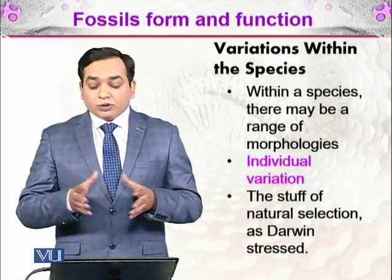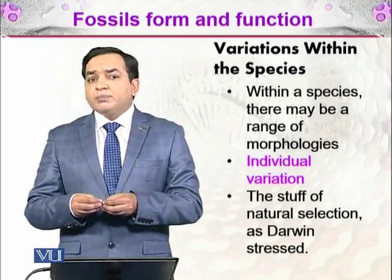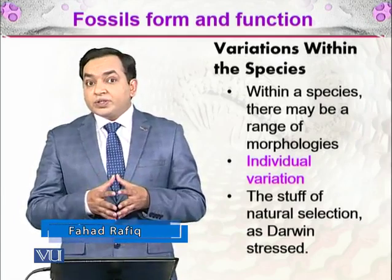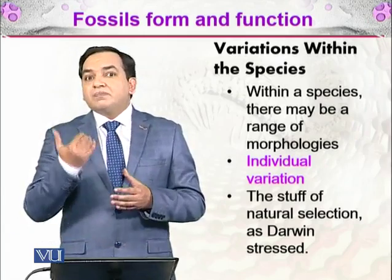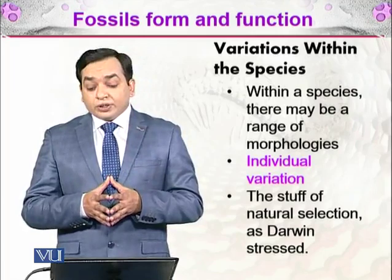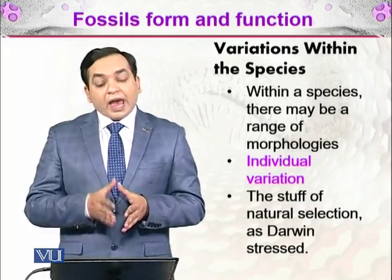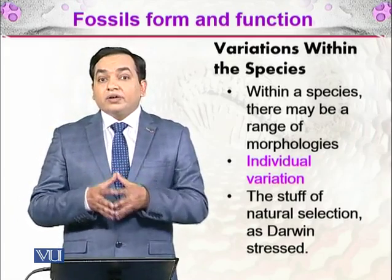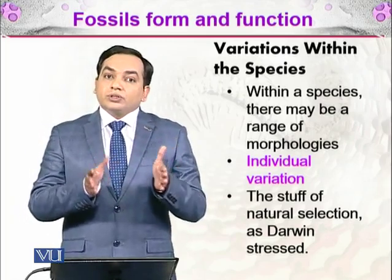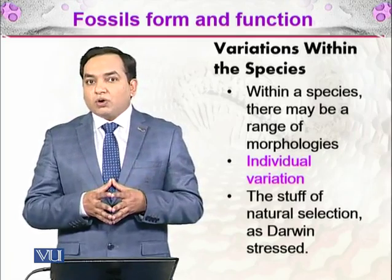Within a species there may be a range of morphologies and individual variation. An organism is always different from another, even brothers and sisters belonging to the same species. Identical twins show less variation, and any difference is due to environmental variation. This individual variation is the stuff of natural selection, as Darwin stressed. When a species is separated from the main parent species, it diverges into a new species through the process of speciation.